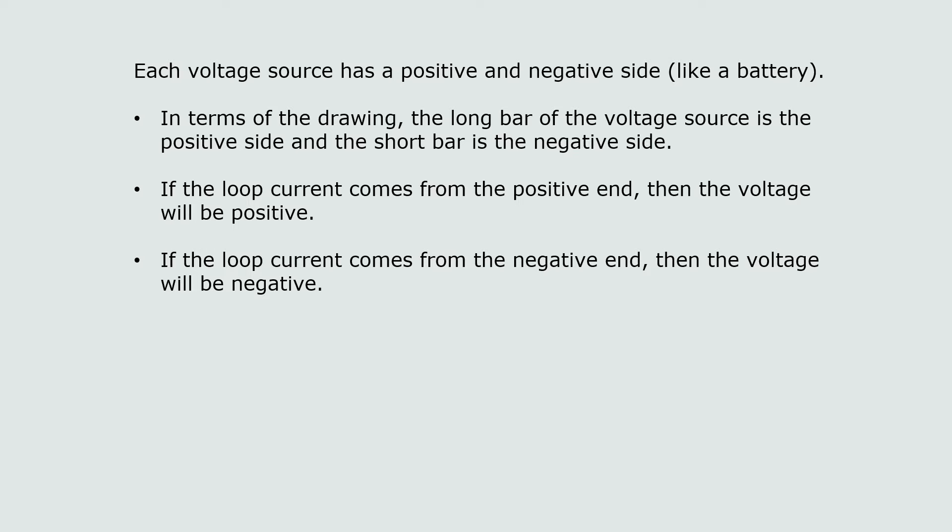Each voltage source has a positive and a negative side, like a battery. In the drawing, the long bar of the voltage source is the positive side and the short bar is the negative side. If the loop current comes from the positive end then the voltage will be positive, and if the loop current comes from the negative end then the voltage will be negative.